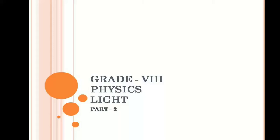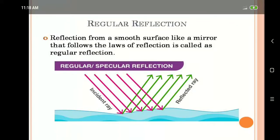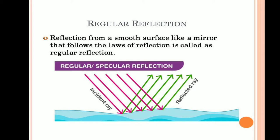Our chapter is light: types of reflection. There are two different types of reflection. One is regular reflection and the other one is irregular reflection. First we'll start with the regular reflection. Reflection from a smooth surface, for example like a mirror. If light falls on it, it follows the laws of reflection and reflects back as a parallel ray. This type of reflection is known as regular reflection.